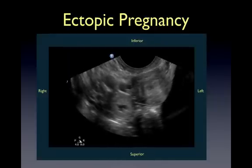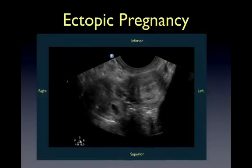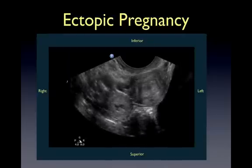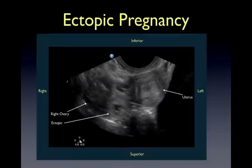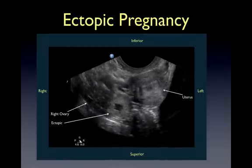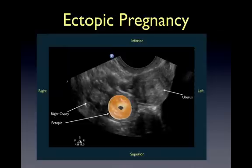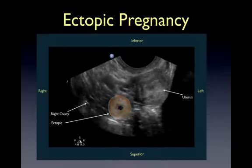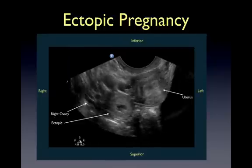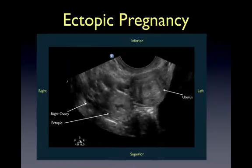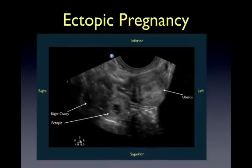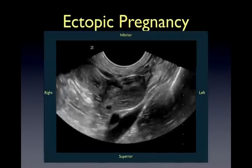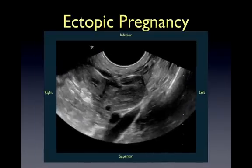A major advantage of transvaginal ultrasound is the earlier gestational age at which the diagnosis of an ectopic can be made. An intact and well-defined tubal ring, commonly referred to as the bagel sign, is seen medial to the right ovary in this clip. While not evident here, you may see a yolk sac, fetal pole, and heartbeat within the tubal ring. In a different patient, this clip depicts a tubal ring medial to the left ovary.